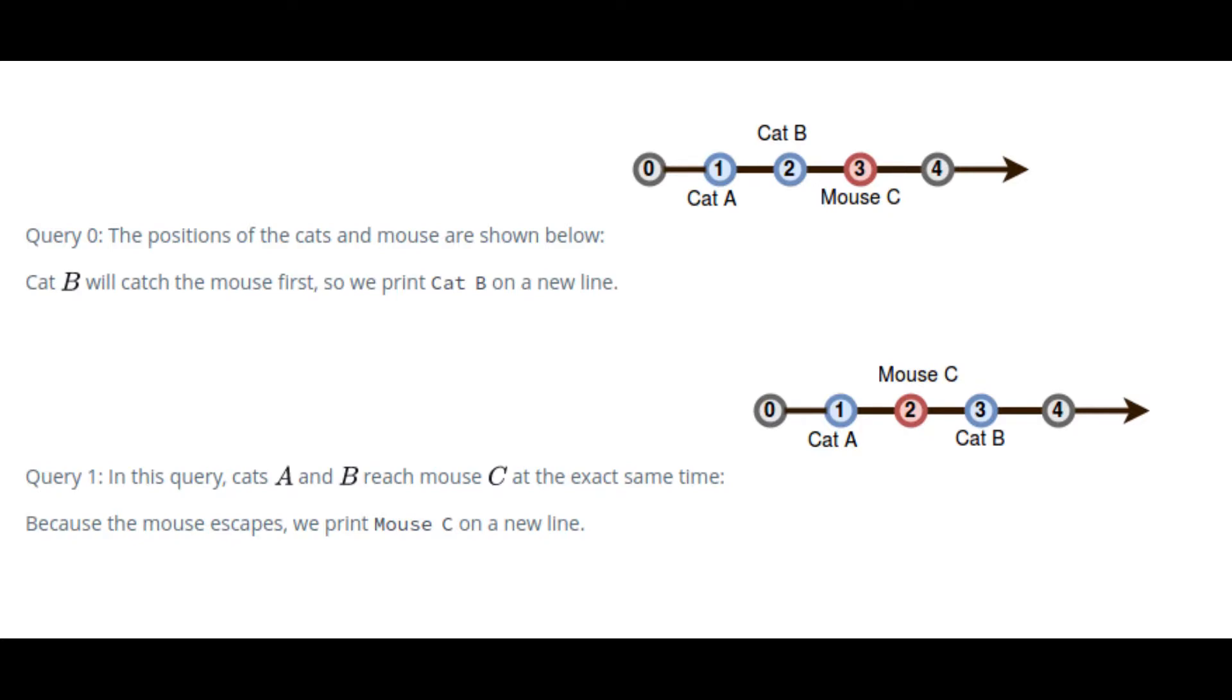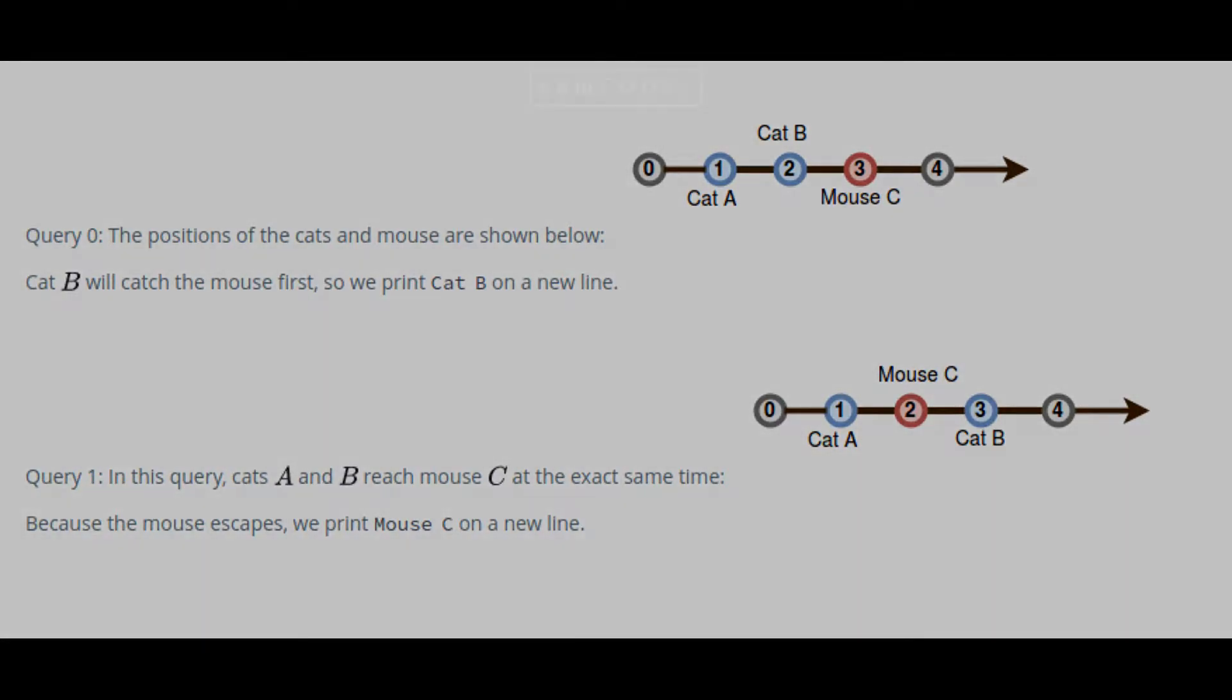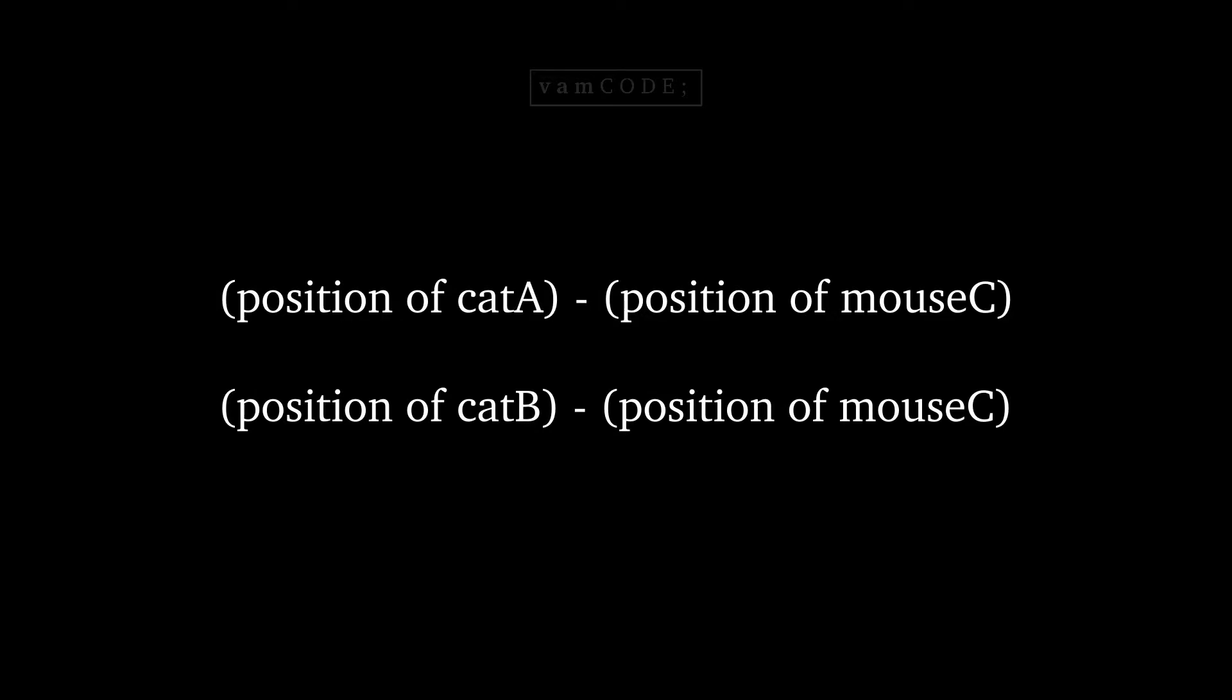To know which of the cats is closer to the mouse, all we have to do is subtract the positions of the cat with the position of the mouse. We also need to remember to only consider the positive values of our result. So we do it with the help of the absolute function.